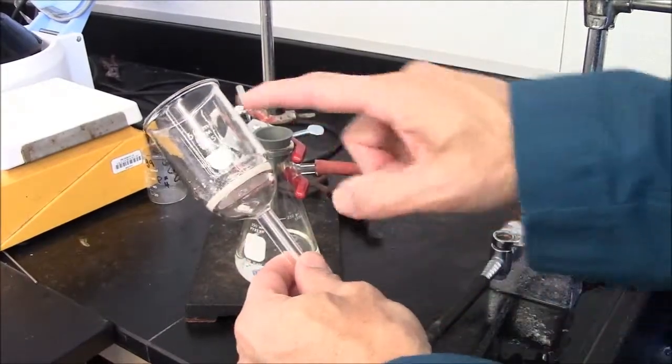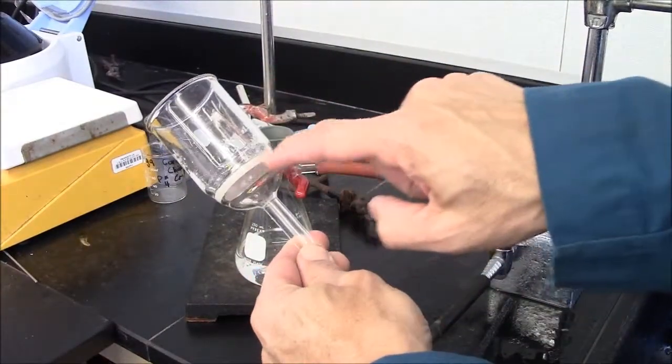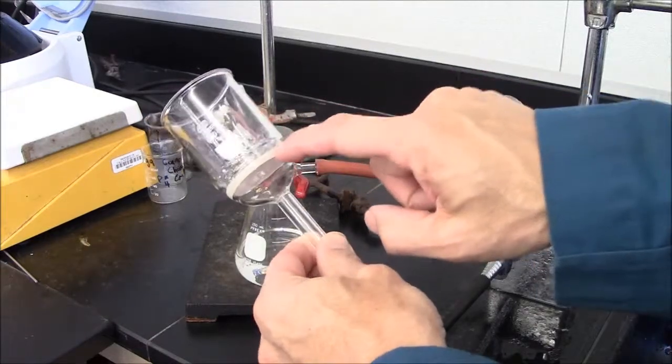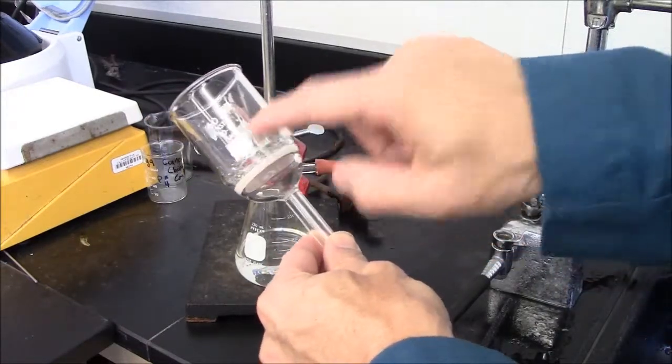Buechner funnel looks like this. It has a sintered glass frit here and it comes in different porosities. This is M for medium.